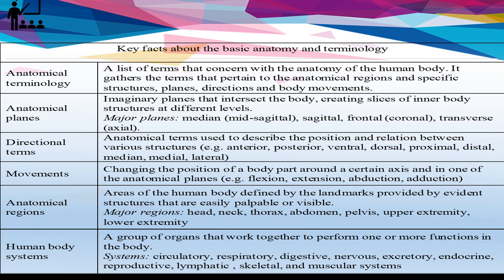Anatomical regions are areas of the human body defined by the landmarks provided by evident structures that are easily palpable or visible. Major regions include the head, neck, thorax, abdomen, pelvis, upper extremity, and lower extremity. Human body systems are a group of organs that work together to perform one or more functions in the body. Systems include circulatory, respiratory, digestive, nervous, excretory, endocrine, reproductive, lymphatic, skeletal, and muscular systems.